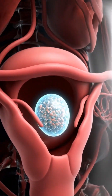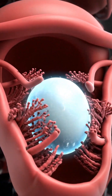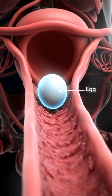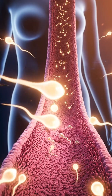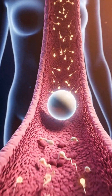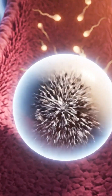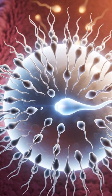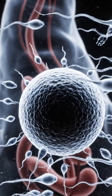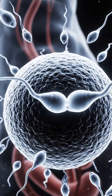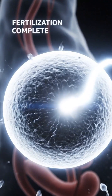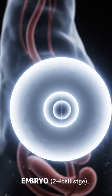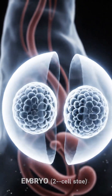Each month, an ovary releases an egg, ready for fertilization. Sperm swim through the female reproductive tract toward the egg. When a sperm meets the egg, they unite to form a zygote, beginning life.